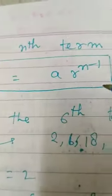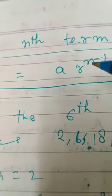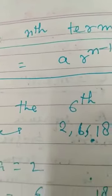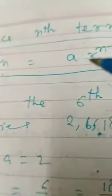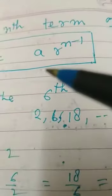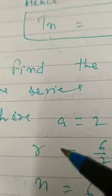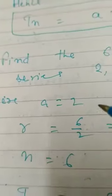Let's look at a question. Find the sixth term of the series: 2, 6, 18 and so on.